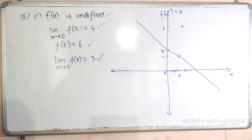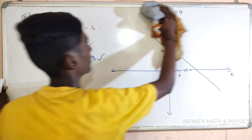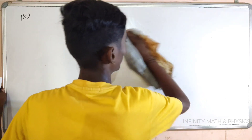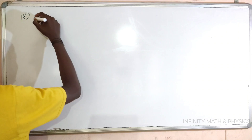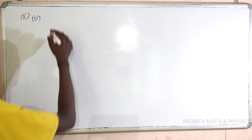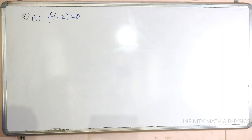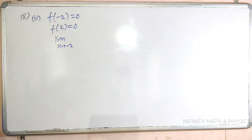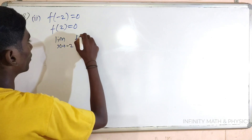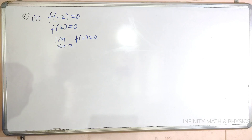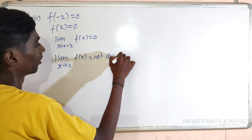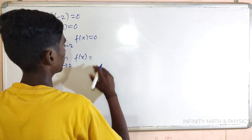Now we have the second subdivision. The conditions are: f of minus 2 equal to 0, f of 2 equal to 0. Limit when x tends to minus 2, f of x equal to 0. Limit when x tends to 2, f of x is undefined — does not exist.